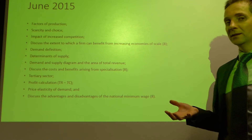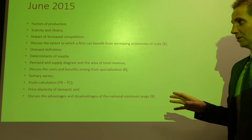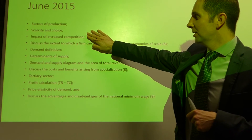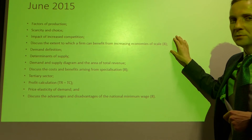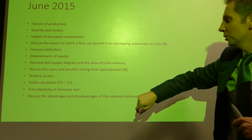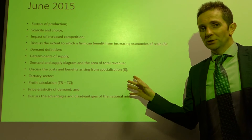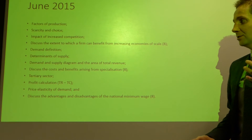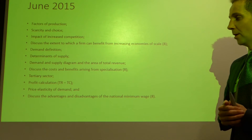So in the last three sessions there's been an extended answer question on specialisation every time — a real pattern. In 2015: factors of production, scarcity and choice, the impact of increased competition, and: discuss the extent to which a firm can benefit from increasing economies of scale — question one. Question two covered demand, supply, total revenue, and: discuss the costs and benefits arising from specialisation. All you need to do is look at the mark schemes for these specialisation questions and learn the advantages and disadvantages printed there.